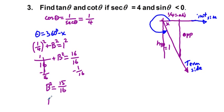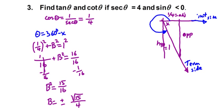Taking the square root of both sides, b equals plus or minus square root of 15 over 4. Since we're in quadrant four and sine is less than zero, we take the negative value. So sine theta equals negative square root of 15 over 4.